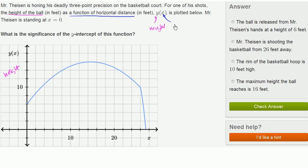So this right over here is horizontal distance. Now, it's plotted below. Mr. Theosin is standing at x equals 0. So he's standing right over here. This is Mr. Theosin.